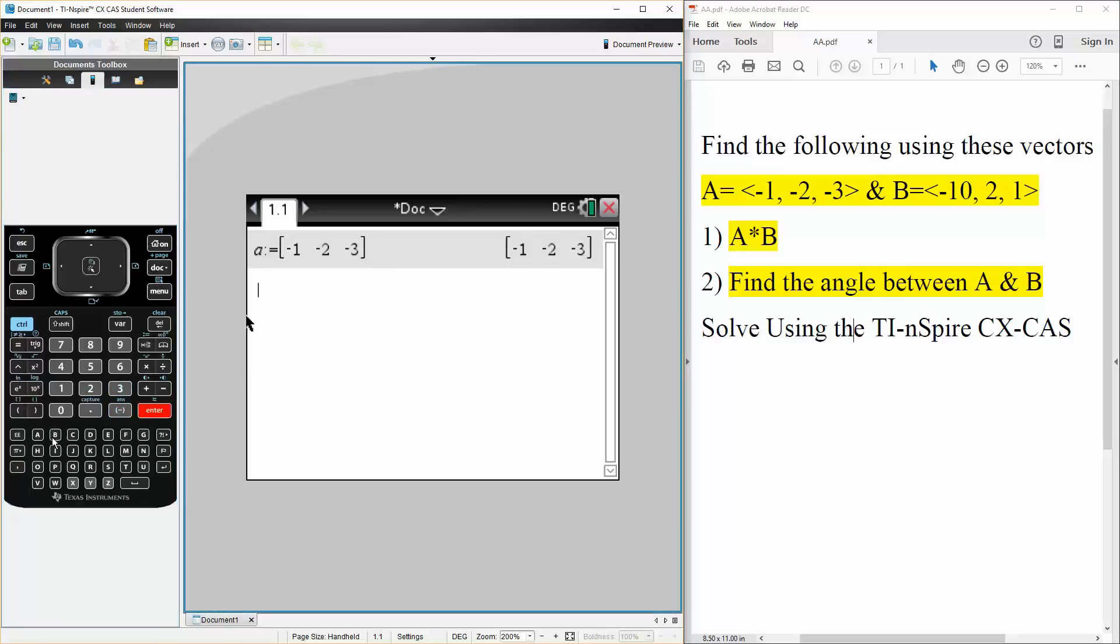Now we do the vector B, so B is defined as square brackets, we have negative 10, comma 2, comma 1, enter.